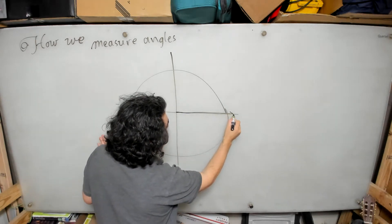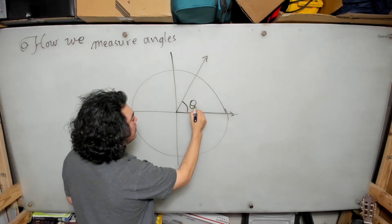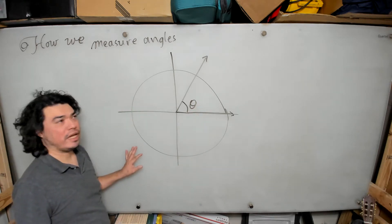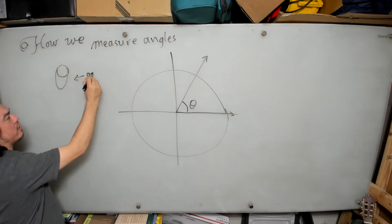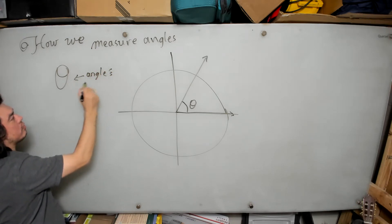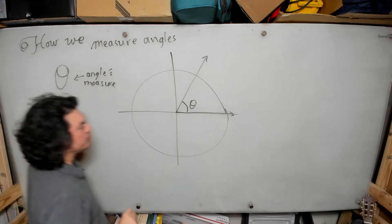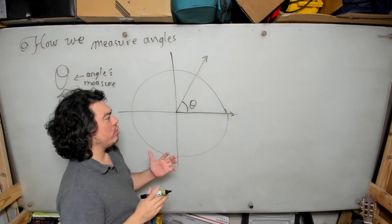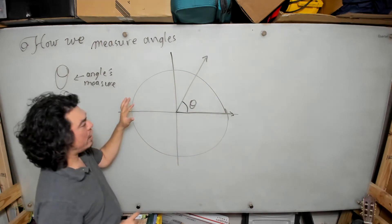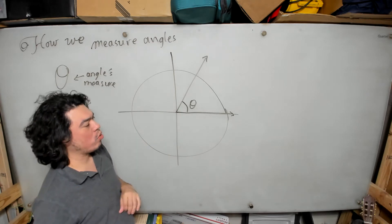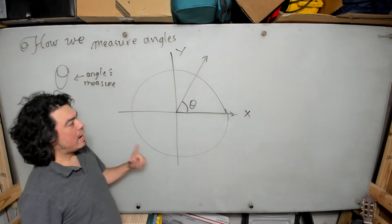Let's assume we have an angle that measures some amount which we're going to refer to as theta. You'll often see the symbol theta used to represent some angle measure. Sometimes you'll also see phi — these are the common ones for denoting angles. Now I want you to imagine that I have this angle theta superimposed upon a coordinate system, the xy-axis, in standard position.